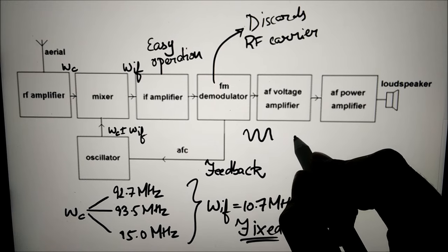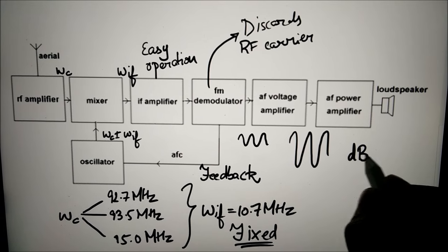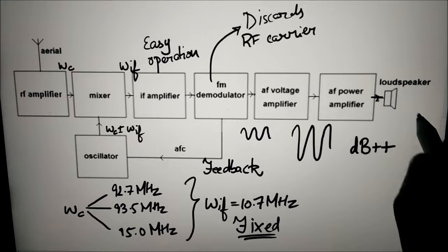The audio signal voltage is increased in amplitude by a voltage amplifier, and then the power level is increased sufficiently to drive the loudspeaker by the power amplifier.